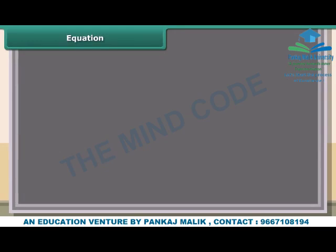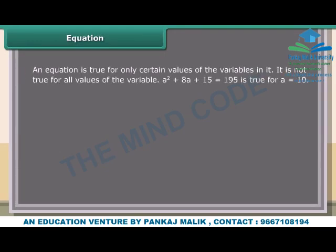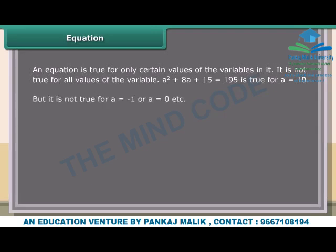Equation: An equation is true for only certain values of the variables in it; it is not true for all values. For example, a² + 8a + 15 = 195 is true for a = 10, but it is not true for a = −1 or a = 0.